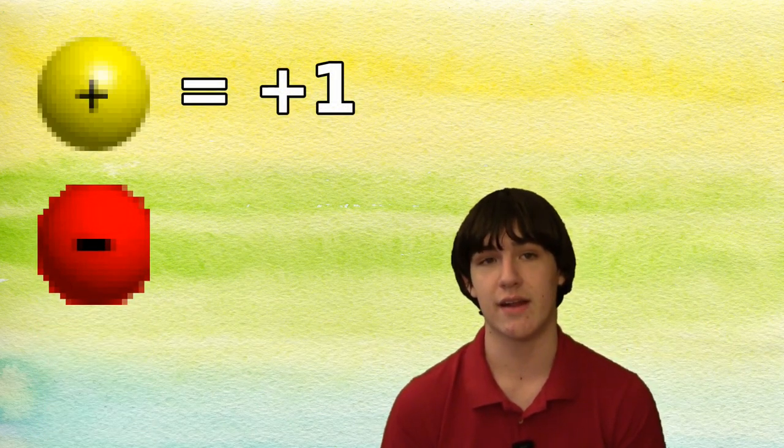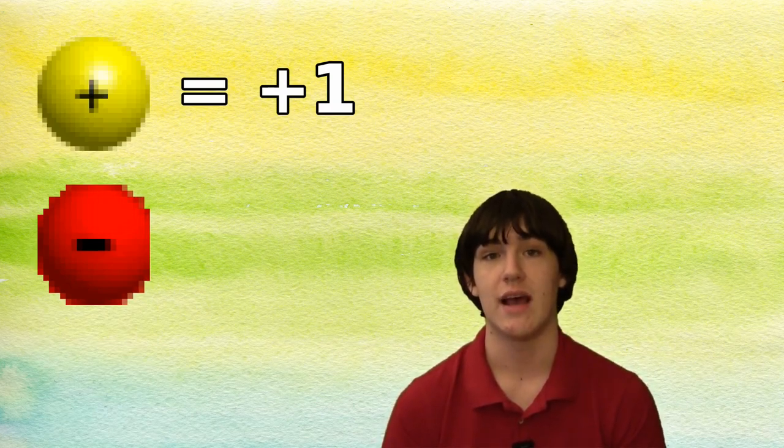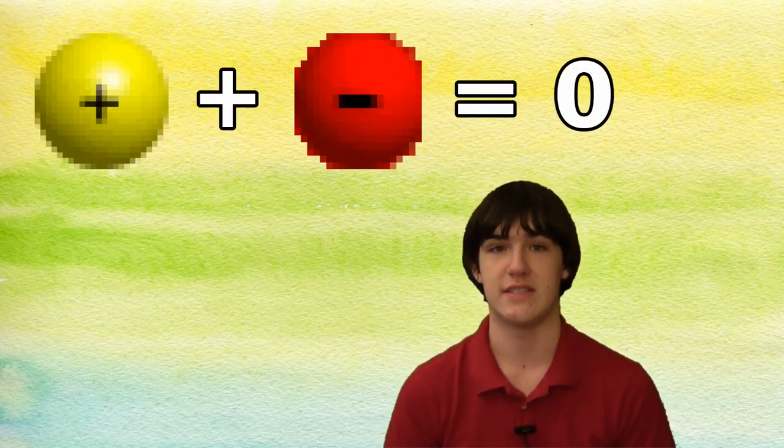Protons have a positive charge and are represented as a positive one, and electrons have a negative charge and are represented as a negative one. In a regular atom, these charges counter each other, resulting in a net charge of zero.